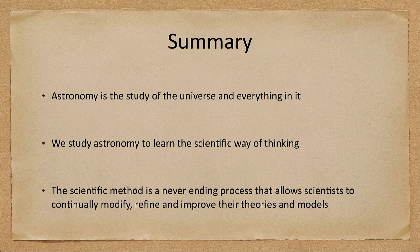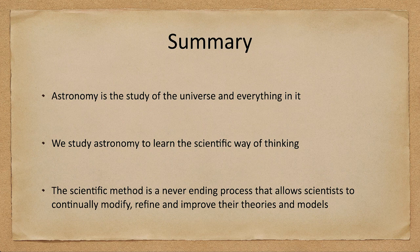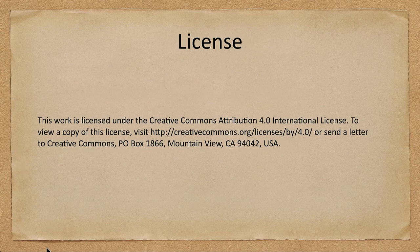To summarize this lecture: we talked about astronomy as the study of the universe and everything in it, and we looked at a few examples. We study astronomy to learn a specific way of thinking — the scientific way of thinking — and we looked at the scientific method as a never-ending process that allows theories and models to be continually refined and improved. That concludes this lecture on astronomy and science. Until next time, have a great day everyone and I will see you in class.